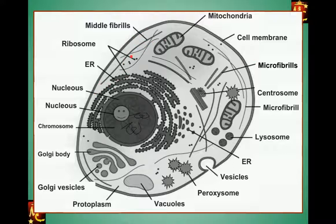Just as the human body has bones that help define body structure, individual cells have some kind of fibers that form the architecture or skeleton of the cell. This is mitochondria, which is involved in energy storage or energy formation.